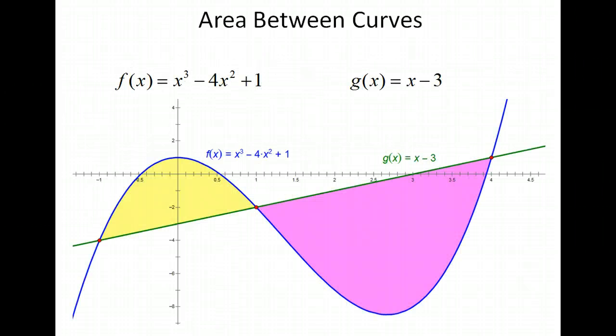Let's look at this specific example. We have the function x cubed minus 4x squared plus 1 — that's obviously the cubic curve. The other one is x minus 3, which is the linear function. We want to find the area between the curves.